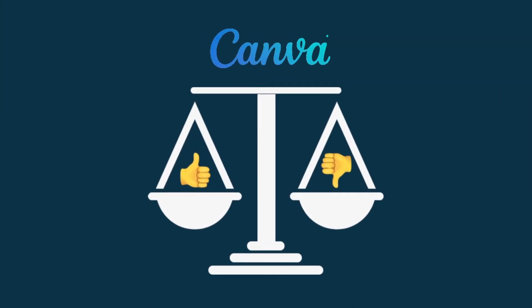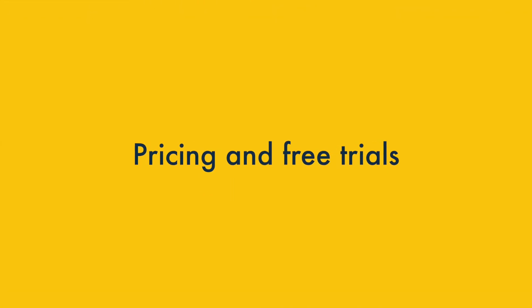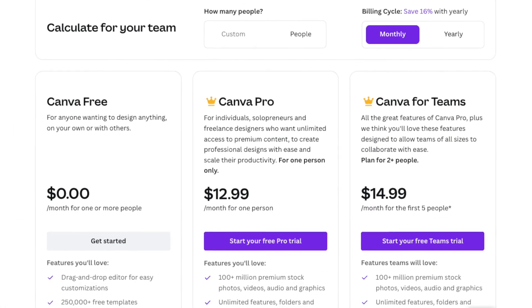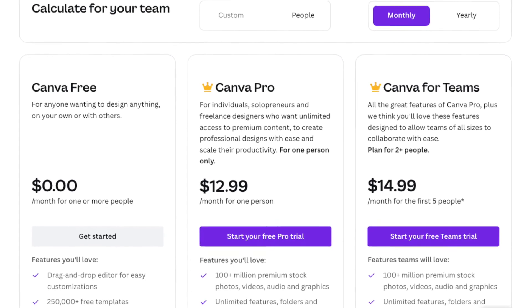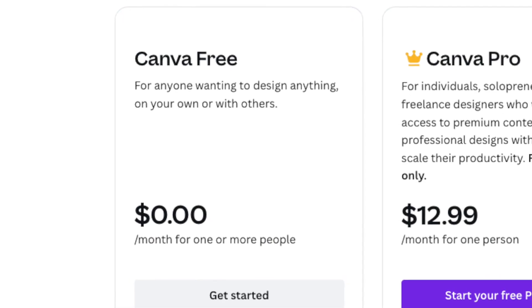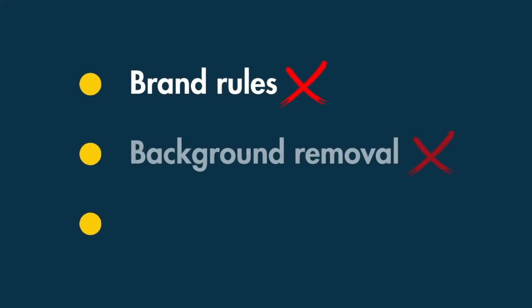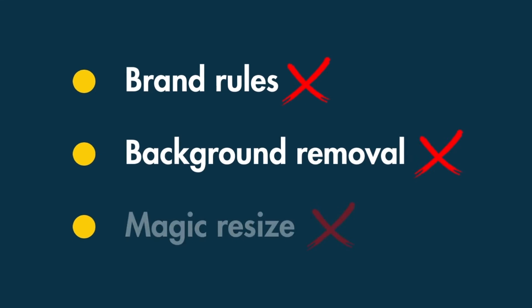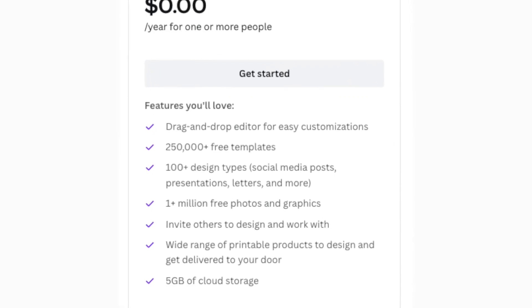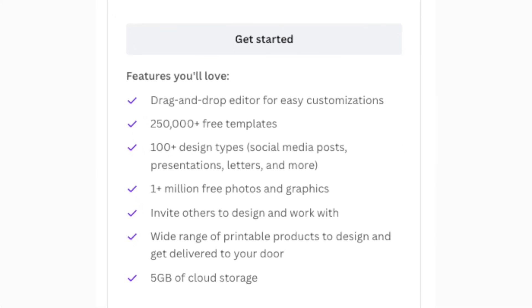So that's our take on the key pros and cons of Canva. Now let's look at how much Canva costs and how to get a free trial. There are three versions available: Canva Free, Canva Pro, and Canva for Teams. Canva Free is entirely free. It doesn't give you access to some key features, including the option to define brand rules, the background removal tool and the magic resize tool, and the export options are more limited. But it still gives you a lot of functionality and access to a lot of royalty-free images.